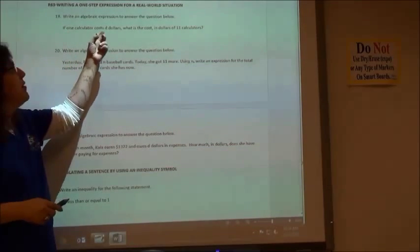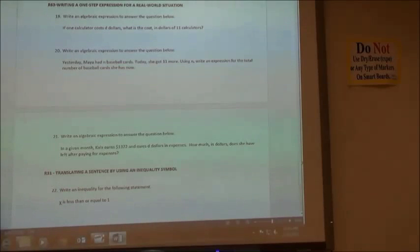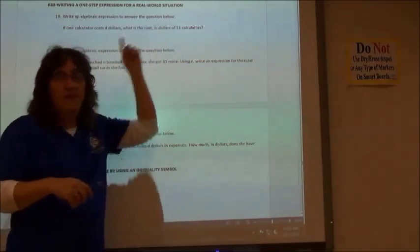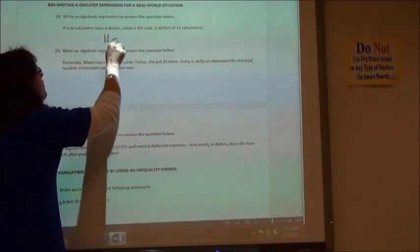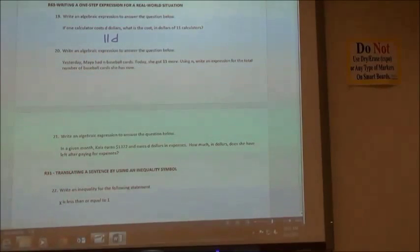One calculator cost me D dollars. In my mind, I think of something that would be easy to work with, so I say a calculator cost me 10 dollars. What is the cost in dollars of 11 calculators? Well, if one cost me 10 dollars and I have to buy 11 of them, I'm going to end up multiplying 10 times 11. So in this case, I want to show D times 11. In algebra, we write the number right in front of the variable, and so D times 11, we show it as 11D.